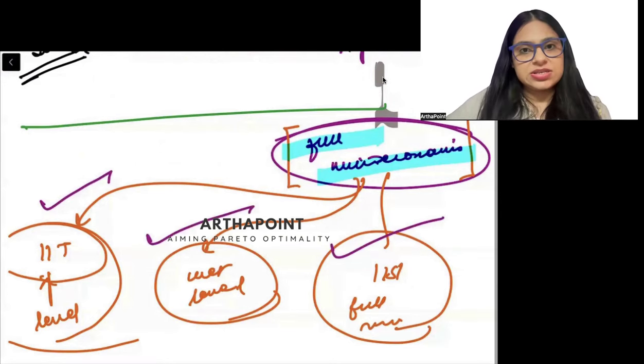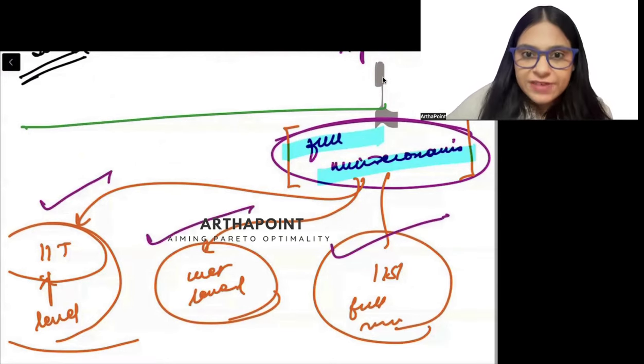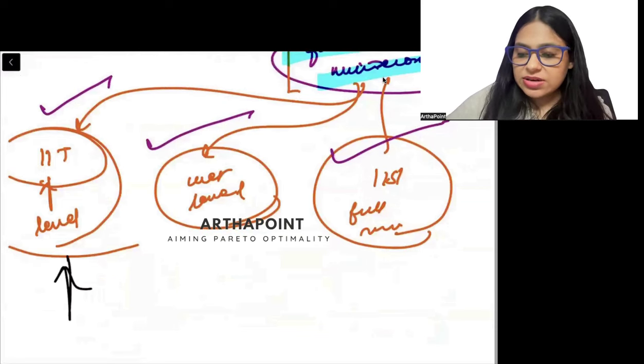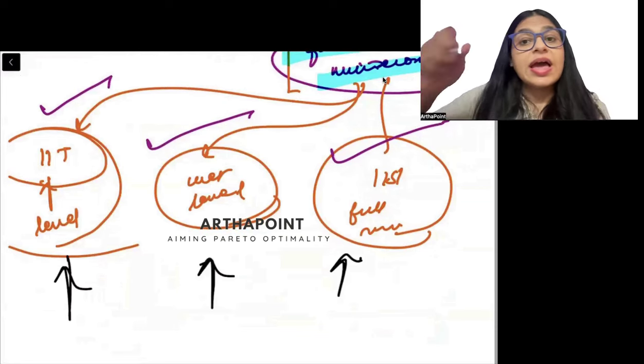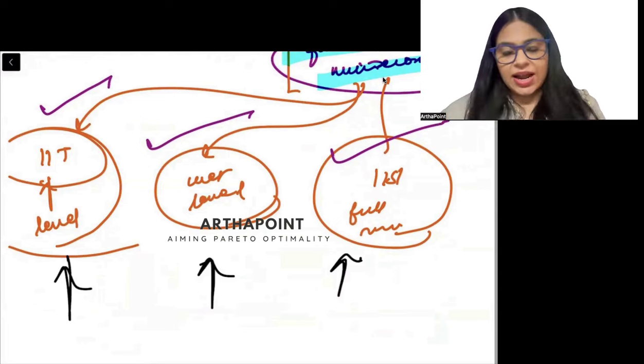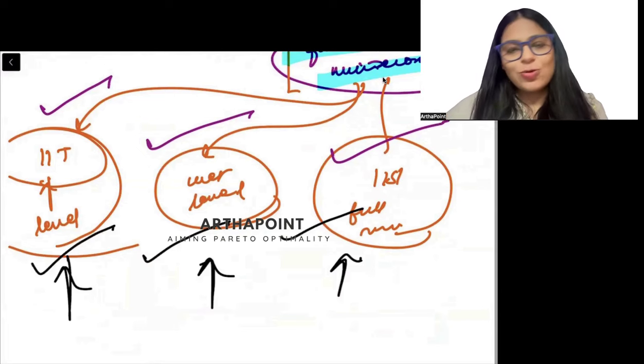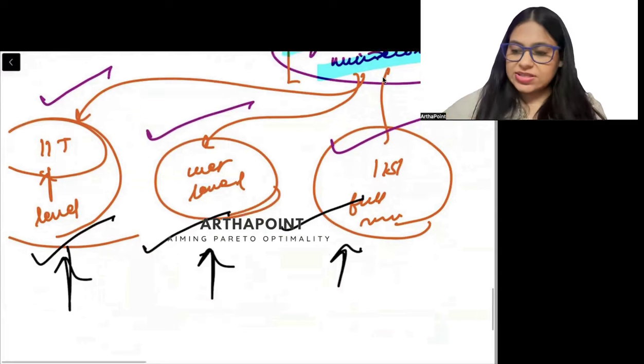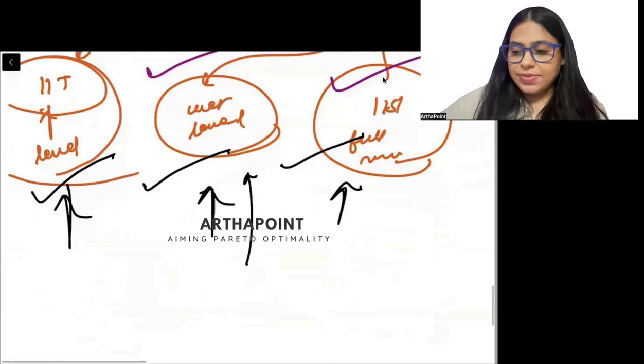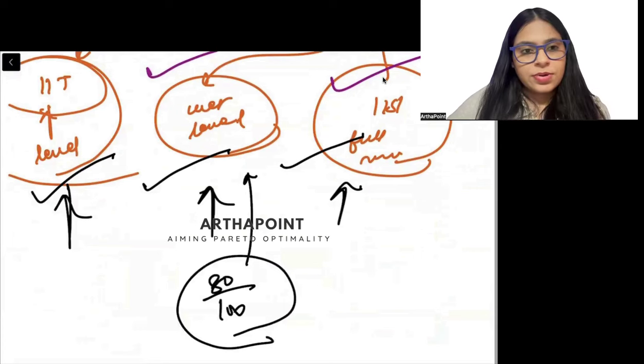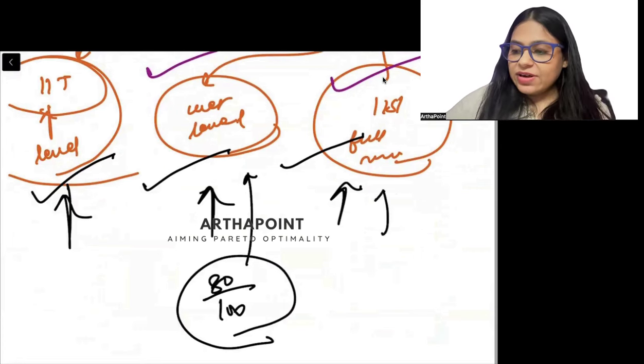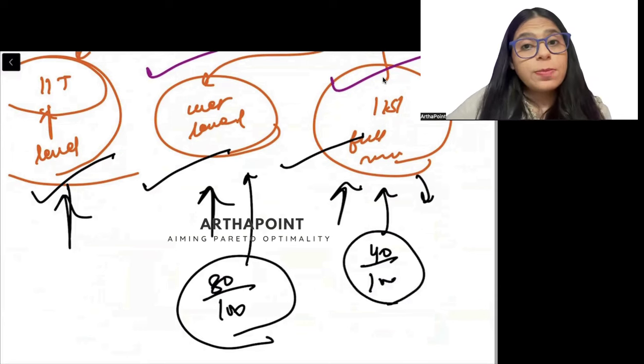So once you have covered microeconomics, you will sit for three kind of microeconomics tests, right? And when you will be sitting for these three kind of microeconomics tests, it will help me understand how much level you have attained. Suppose let's say ki at this level, yaha pe CET mein you go ahead and you score 80 out of 100. But IIT level test mein you are only scoring 40 out of 100, which means you need more practice in complicated questions.